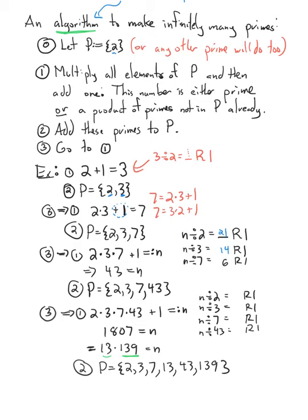But we're just building up a new number to add to P by multiplying all of our elements of P and then adding 1. And we know that number isn't divisible by any of the numbers here because it's a multiple of these, but one more than it. So you'll always get a remainder of 1 if you divide it by any of these. So it's not divisible by 2, 3, 7, 13, 43, or 139. So it's either going to be prime, or it's going to be a factor of primes we don't already have in our set. That's always going to hold. So add those primes to your set, and repeat.